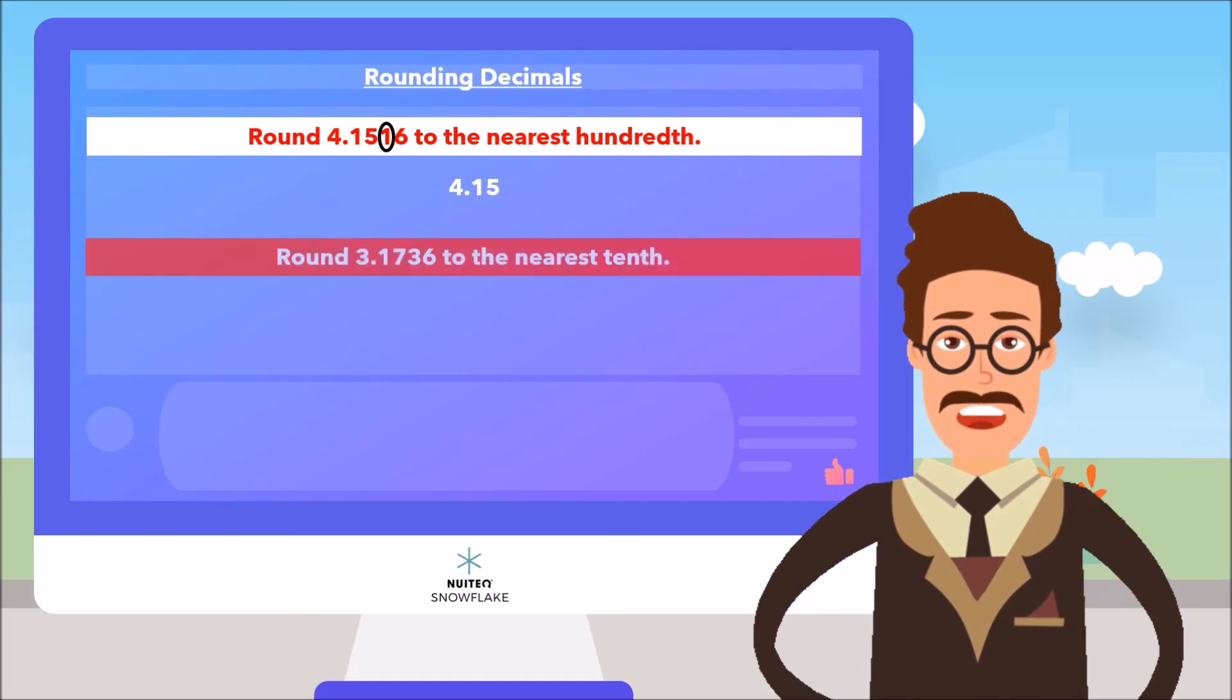And if we want to round 3.1736 to the nearest tenth? The answer is 3.2, as the next digit, 7, is 5 or more.